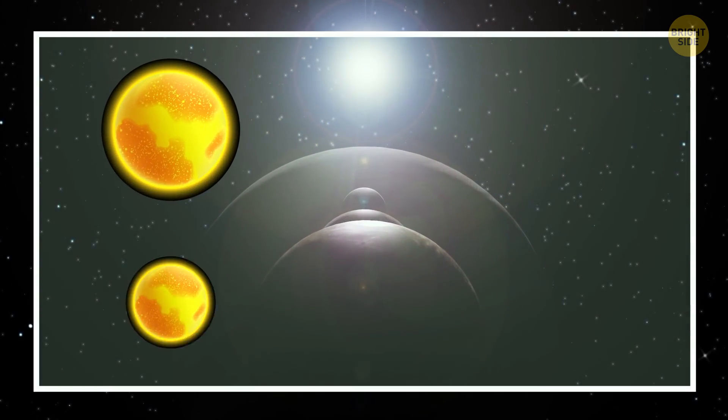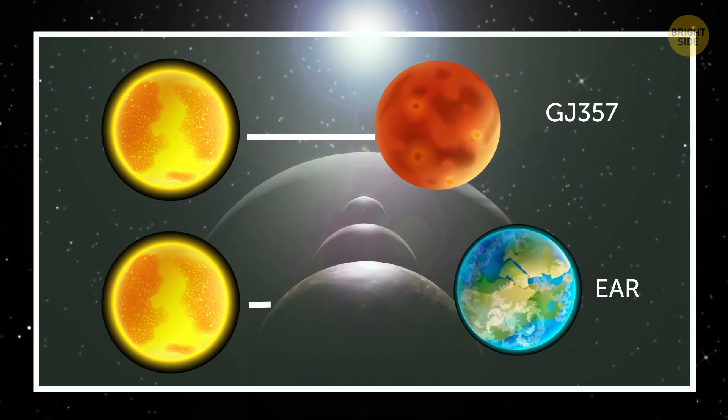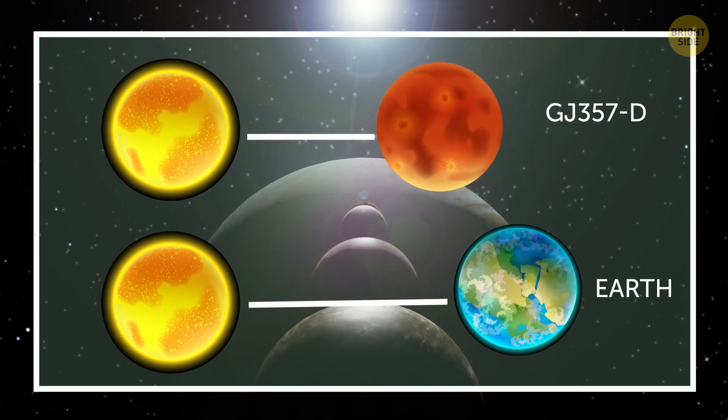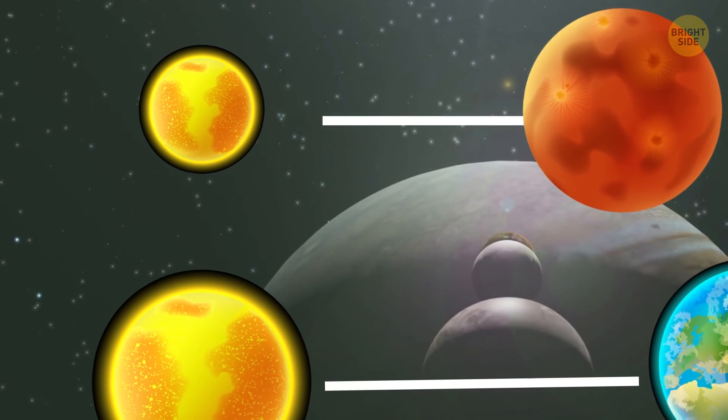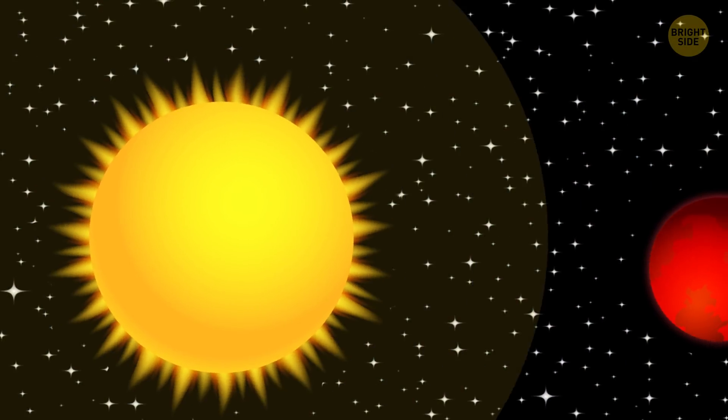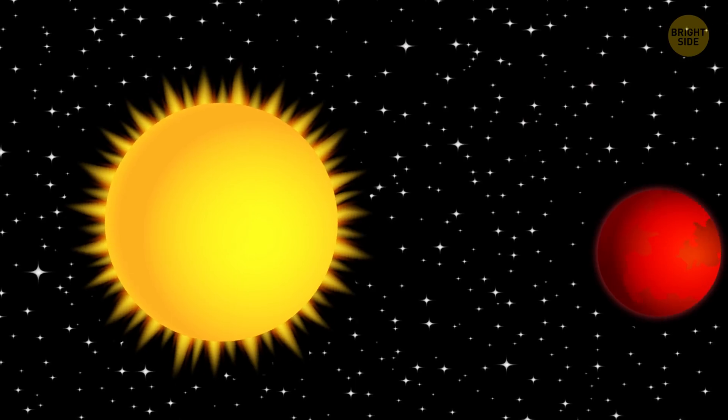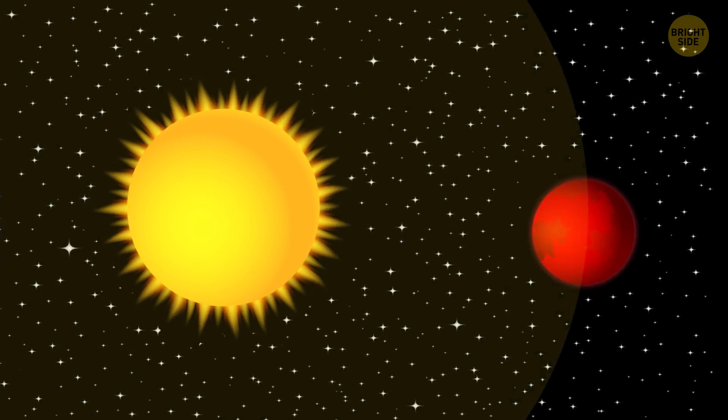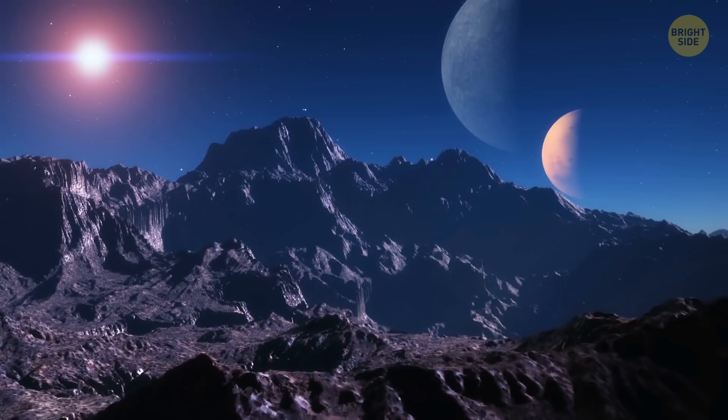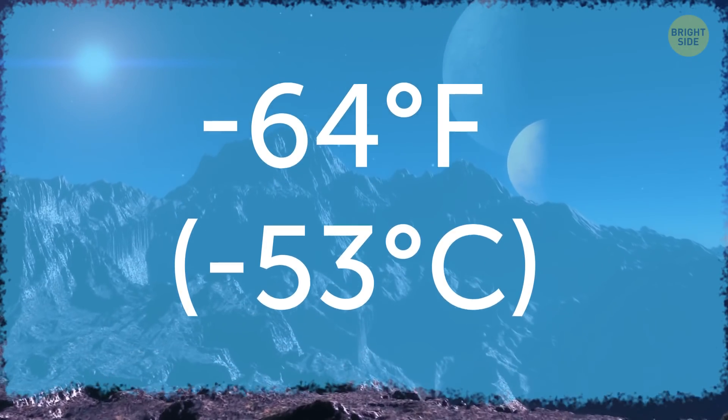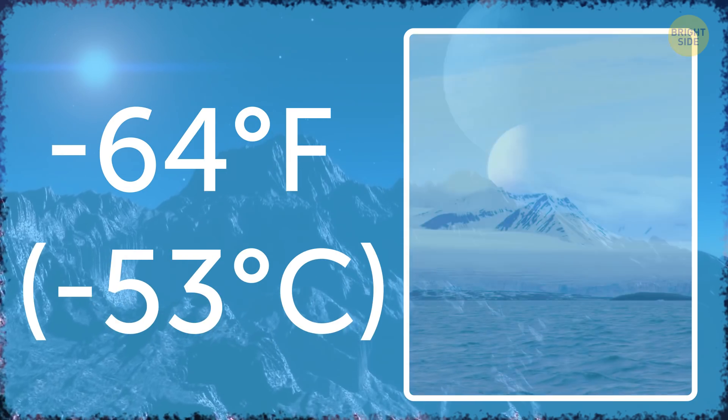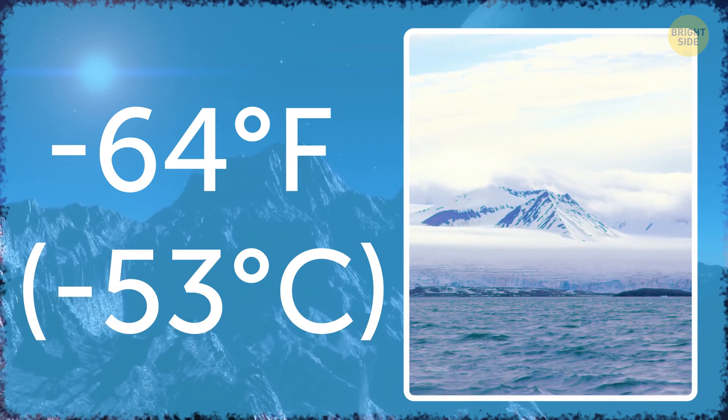It's about 20% closer to its star than Earth is to the Sun, but GJ357 is much smaller than our neighborhood ball of gas and plasma. Despite its proximity, GJ357d receives about the same amount of energy as Mars. NASA scientists estimate that the planet has an average temperature of about minus 64 degrees.